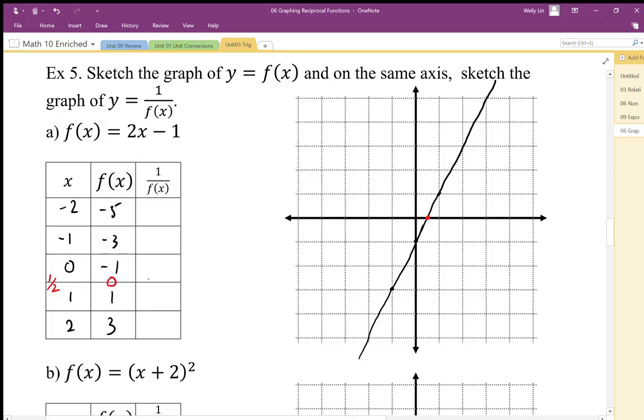And then this is going to give us our undefined value. And that's going to be where our vertical asymptote is. So that's really important that we locate that 0 because that's going to be our key point.